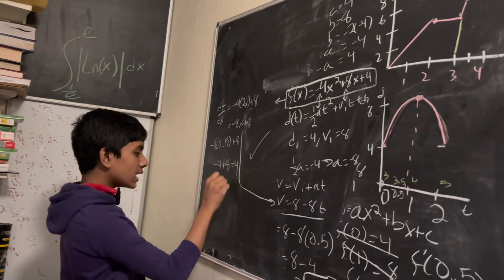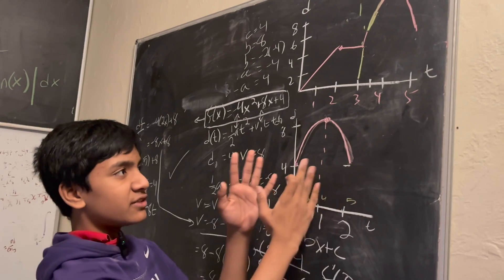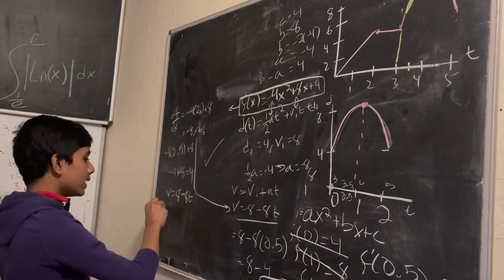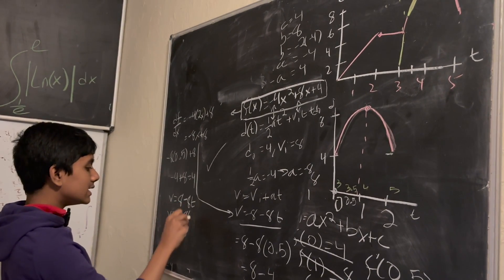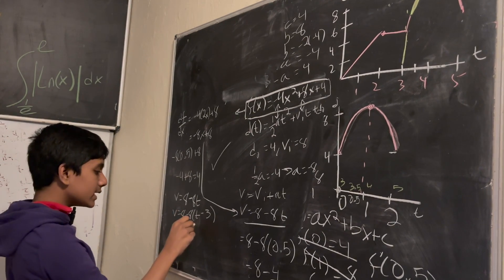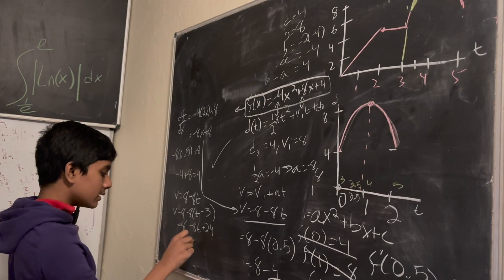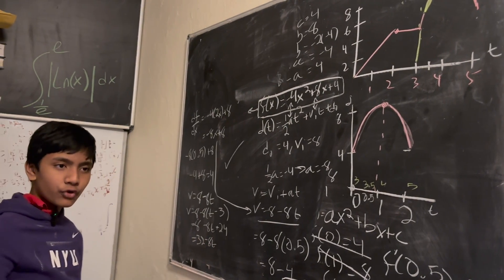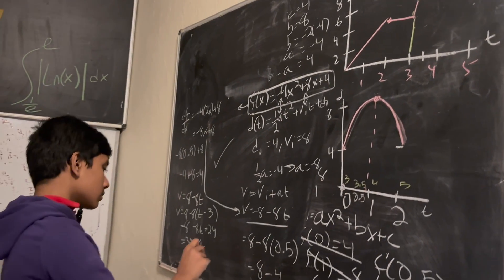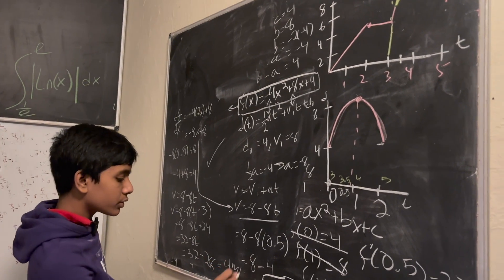So we already know v equals 8 minus 8t. But of course, this only works in our time-shifted reference frame. So if we want to get back to the original reference frame, we're actually going to want to plug in v equals 8 minus 8 times t minus 3. So we get 8 minus 8t plus 24, which gets 32 minus 8t, which is the exact same thing we saw in the first method. Now we plug in 3.5, and we get 32 minus 28 is equal to 4, once again reaffirming the answer.